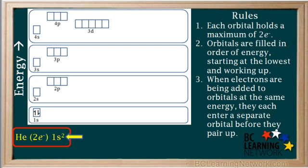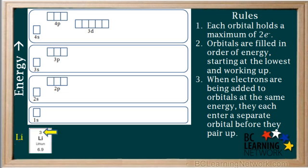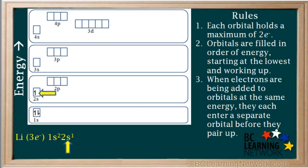From now on, when we say configuration, we automatically mean the ground state configuration. Let's do lithium. Its atomic number 3 means it has three electrons. The first two electrons go into the 1s orbital, but there's only room for two electrons in each orbital. So lithium's third electron goes into the next lowest energy orbital, the 2s. Because there's one electron in the 2s orbital, we write a 1 here. So the configuration of lithium is 1s², 2s¹.